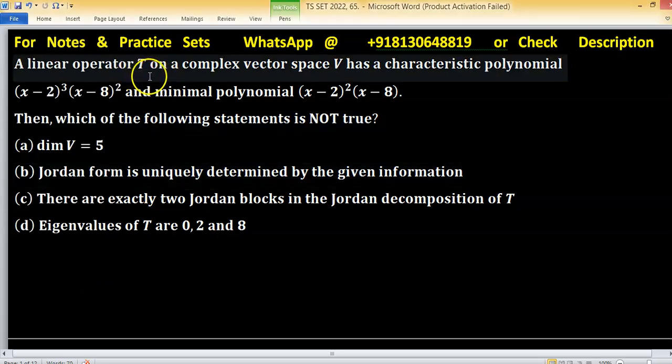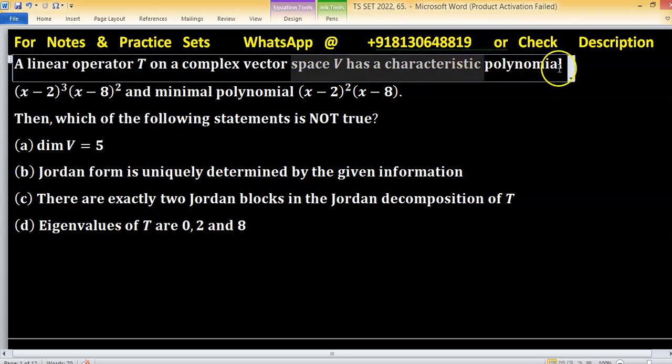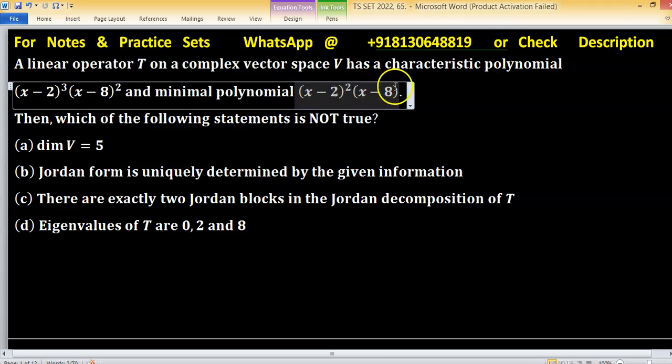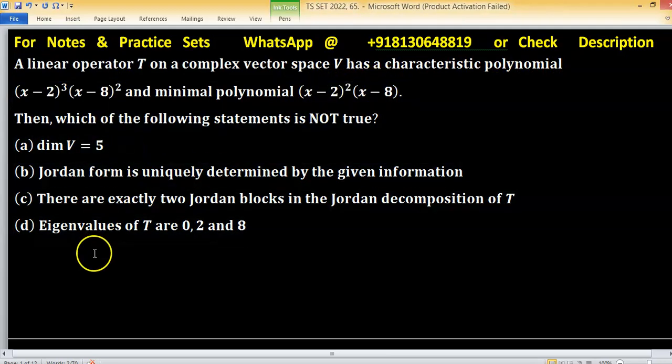A linear transformation T on a complex vector space V has a characteristic polynomial. This is the characteristic polynomial and this is the minimal polynomial, and we have to tell which statement is not true.